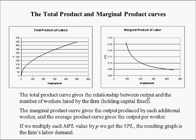If we multiply each marginal product value by the price, we get the value of the marginal product of labor curve — this curve is the firm's labor demand curve. For example, if you sell a bottle of water for a dollar and multiply the marginal product of labor by one dollar everywhere on this curve, it becomes the labor demand curve. We'll talk more about that in the future.